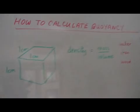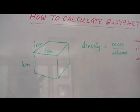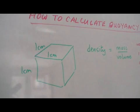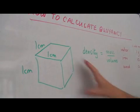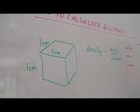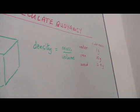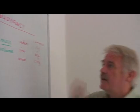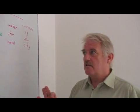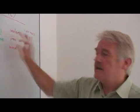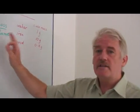Now if I have a cube of water one centimeter by one centimeter by one centimeter its mass will be one gram — it's always going to be one gram. If I have a larger cube two centimeters by two centimeters by two centimeters this will actually have a mass of eight grams and so on. So the density tells us that the mass of the object depends on its volume but the density is always the same.